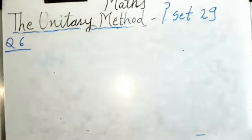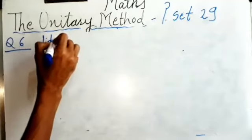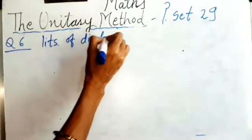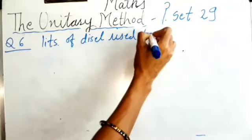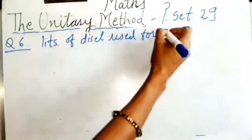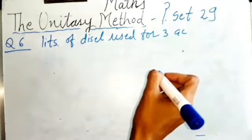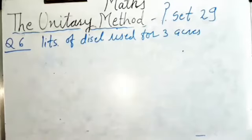What is given — litres of diesel used for 3 acres. Now, acre is the unit of land measurement. We measure land in acres.